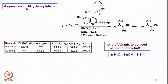Then we looked at asymmetric dihydroxylation — Sharpless-based dihydroxylation — where double bonds were converted to the corresponding syn-diols. During the process we saw how chiral alkaloids were utilized, and how AD-mix alpha and AD-mix beta can be used in a predictable fashion in organic synthesis.